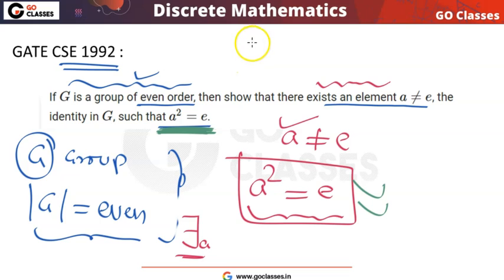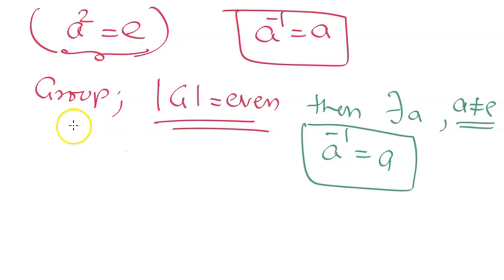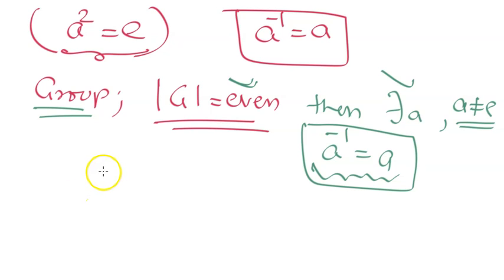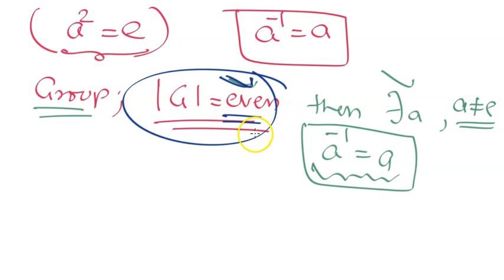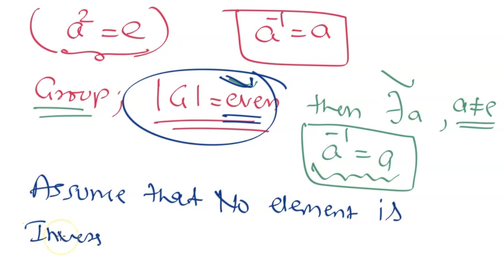In a group, a² = e means a⁻¹ = a, meaning a is the inverse of itself. So instead of proving a² = e exists for a non-identity element, we can equivalently prove that there exists a non-identity element which is its own inverse. How can we prove this? We use proof by contradiction. Let's assume this is not true - assume that no element is the inverse of itself.